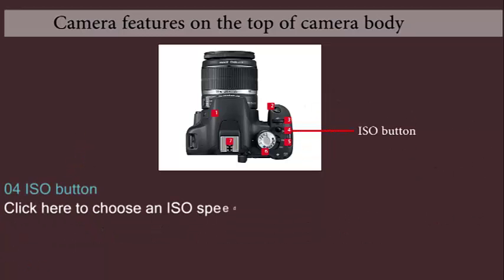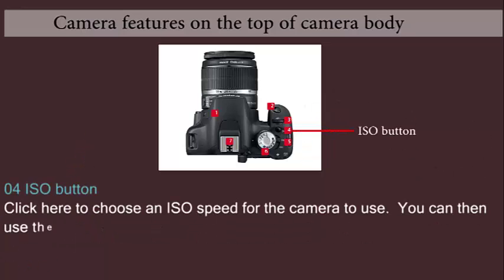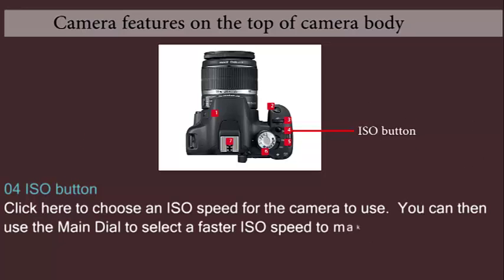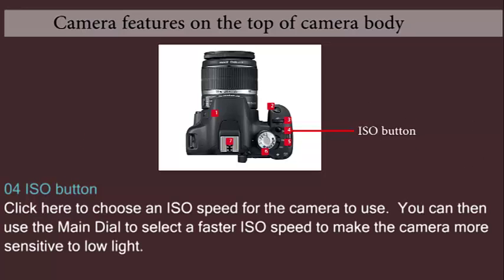ISO button: Click here to choose an ISO speed for the camera to use. You can then use the main dial to select a faster ISO speed to make the camera more sensitive to low light.